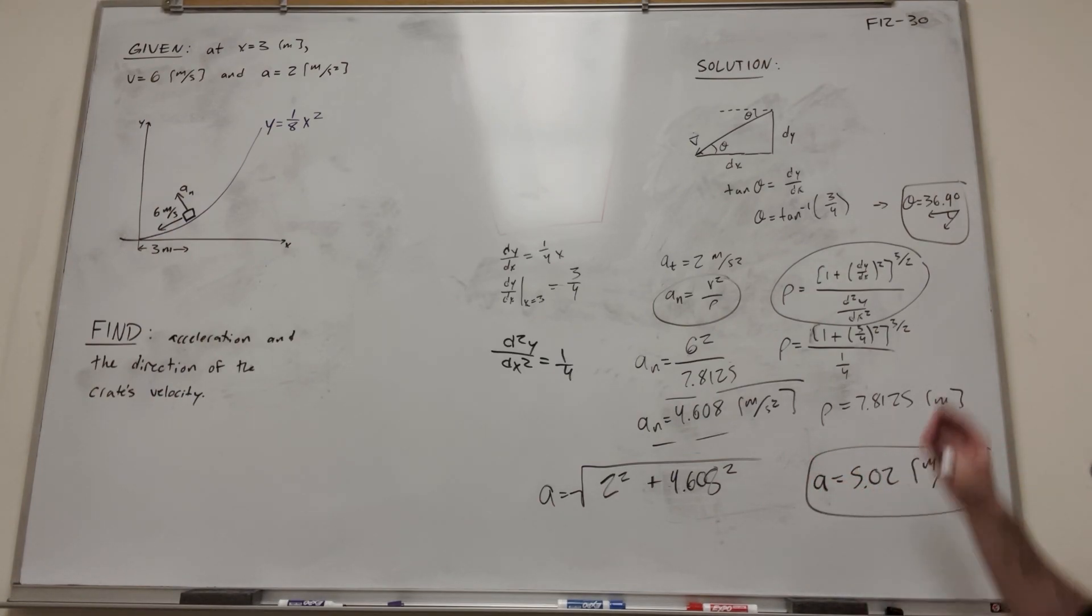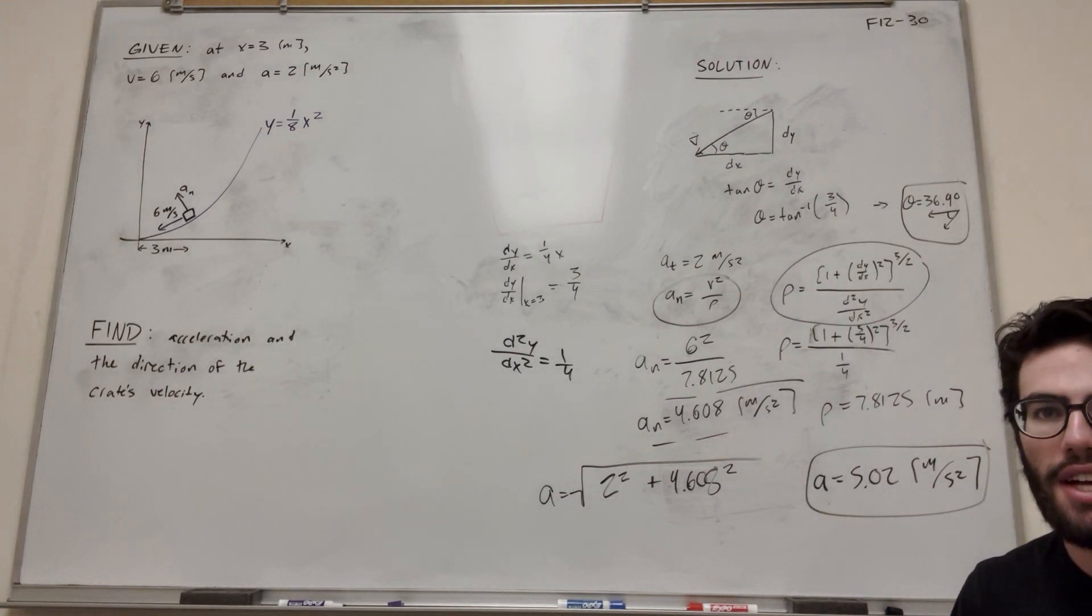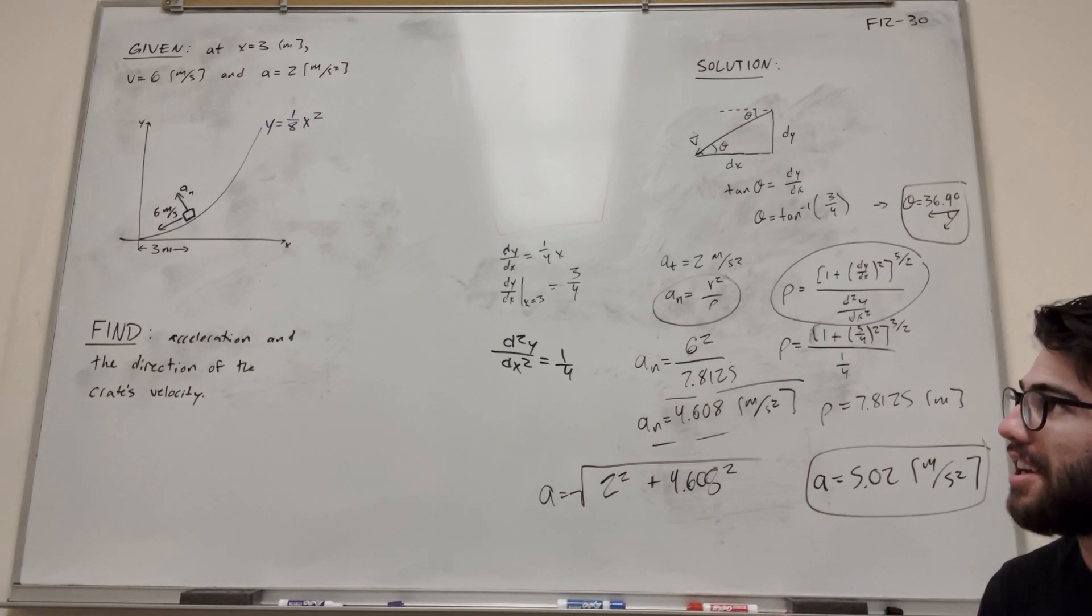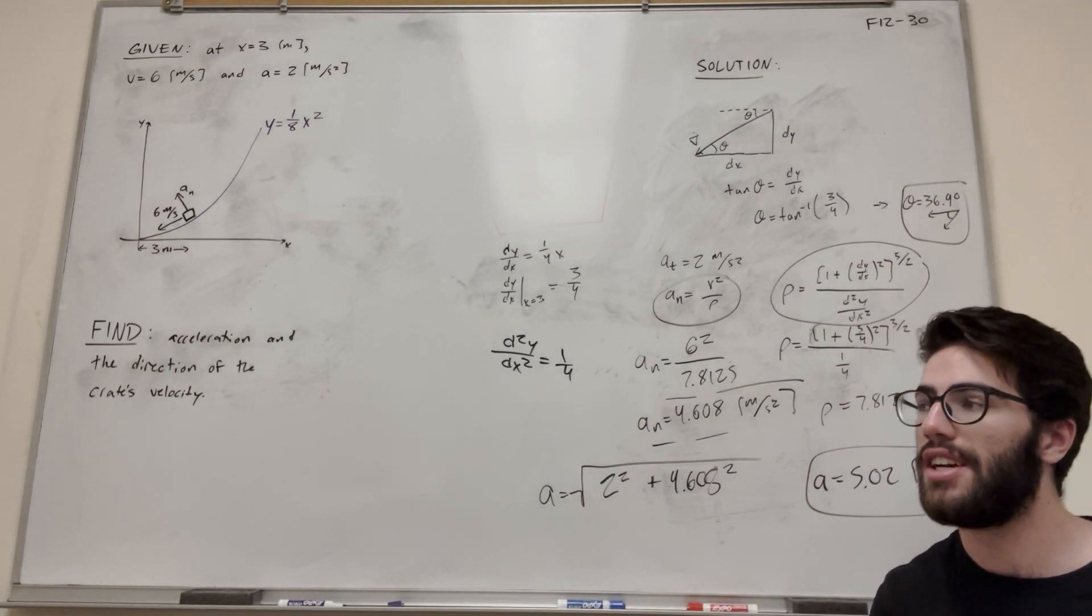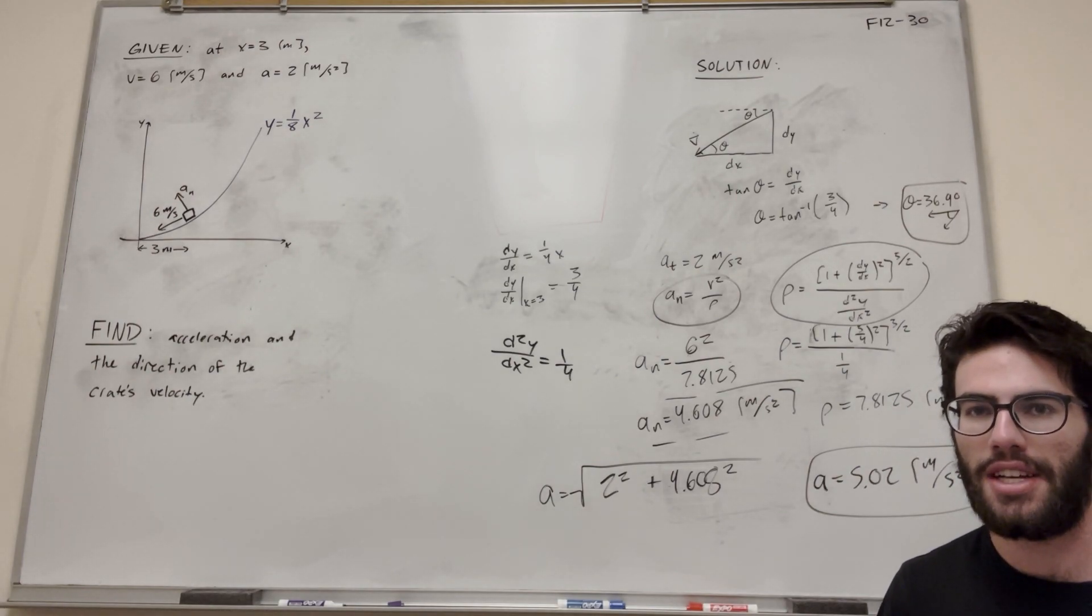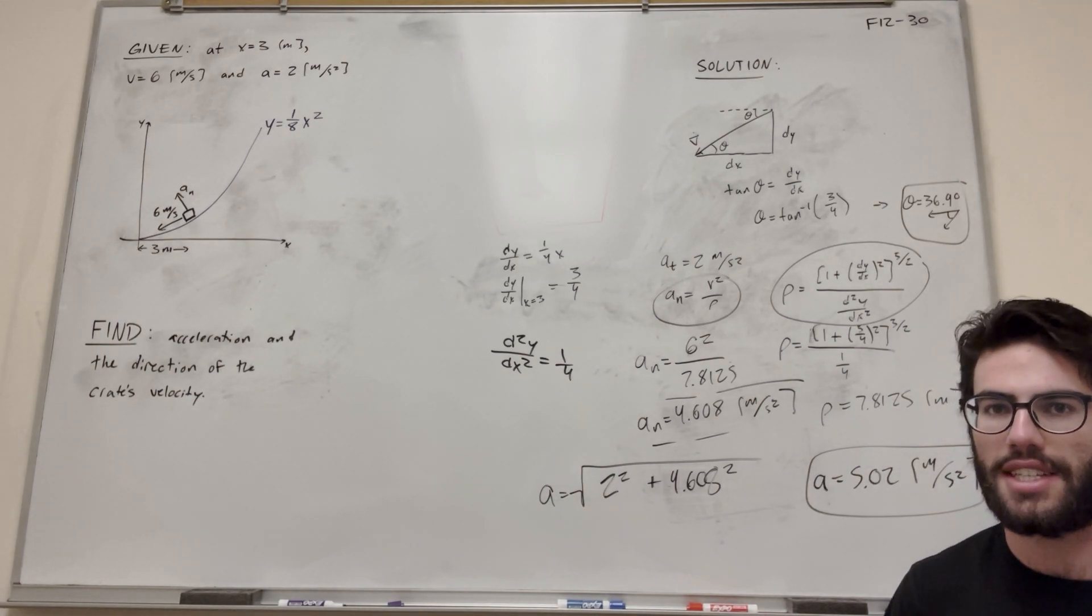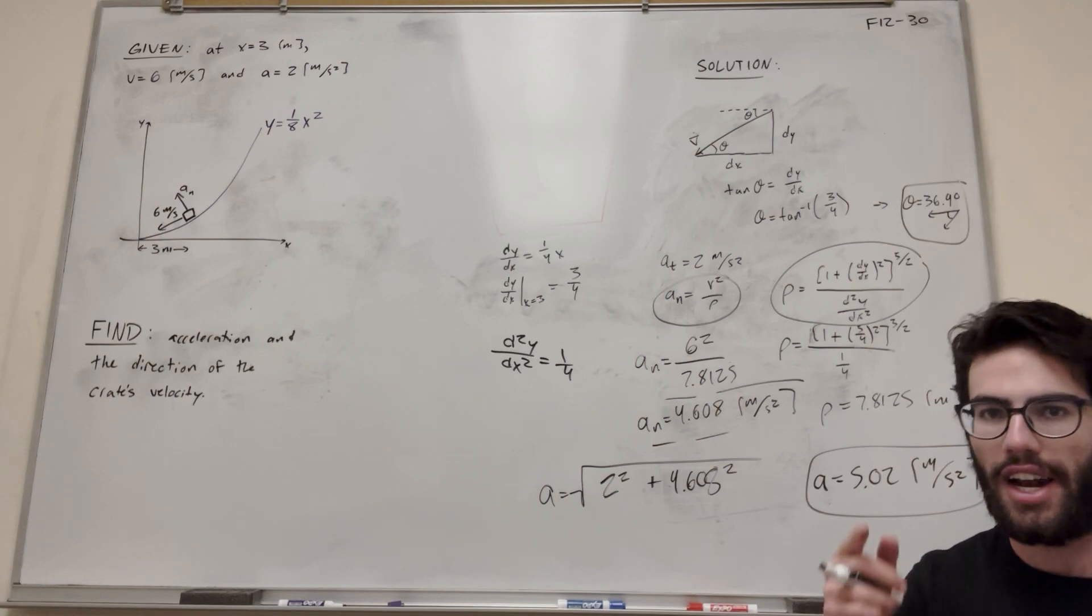And there we go. So there's the two answers. We found the theta, the angle of the direction, and the acceleration at that moment. So yeah, this question's a little bit more tricky, but still it's just about using the equations and understanding acceleration tangent versus acceleration normal. So yeah, any questions, feel free to ask them in the comments. Check out my playlist, and I'll see you in the next one. Peace.